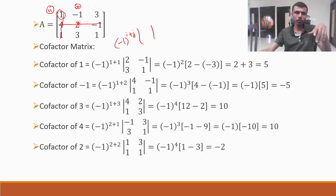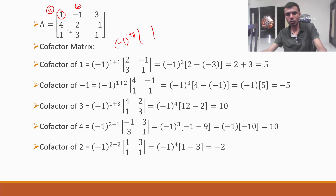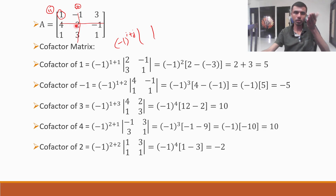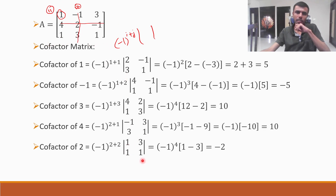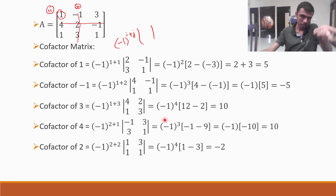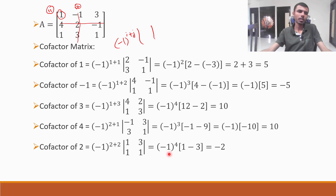Now, cofactor of element 2. Be careful — this is where some of you make mistakes. Element 2 is in second row, second column, so position (2,2). Minus one to the power 2 plus 2, into det of [1, 3; 1, 1]. One into one is 1, minus one into three is 3. So 1 minus 3 is minus 2. Minus one to the power even number is plus one. So cofactor is minus 2.